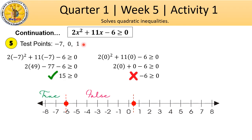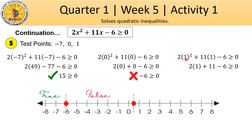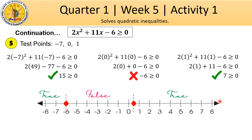Last test point is 1. Substituting: 2 times 1 squared is 2. Plus 11 times 1 is 11. Minus 6 equals 7. Is 7 greater than or equal to 0? Yes! So this region is true. As you can see, two regions are true. Therefore, we shade both of those regions.